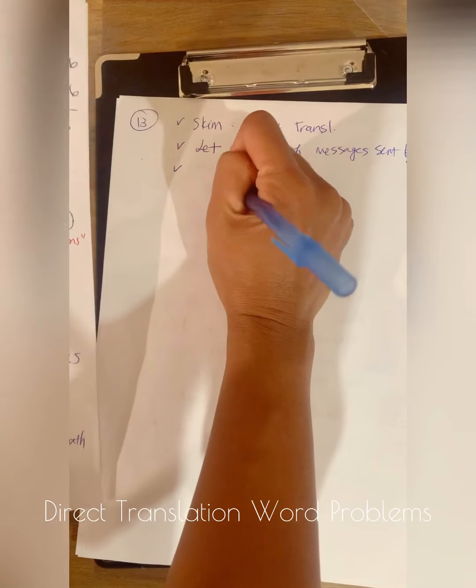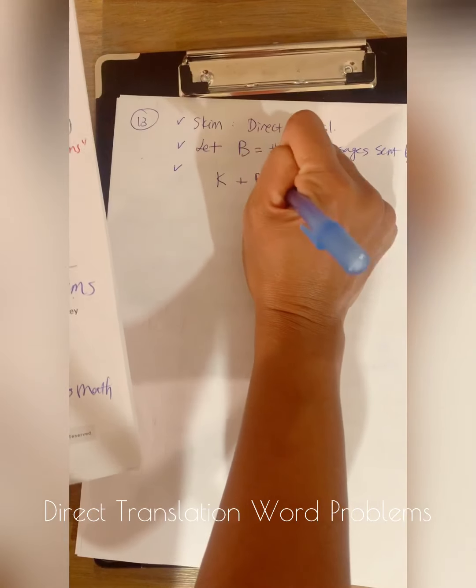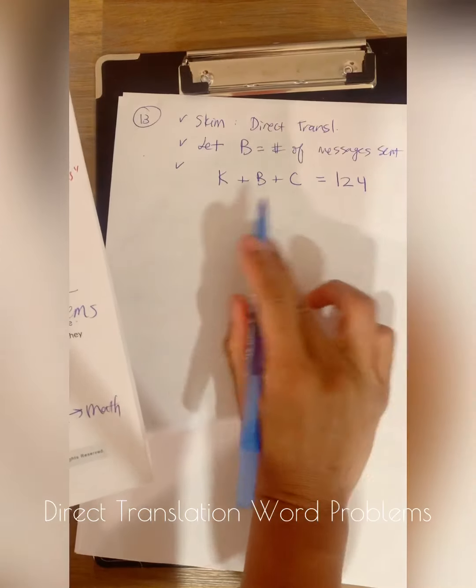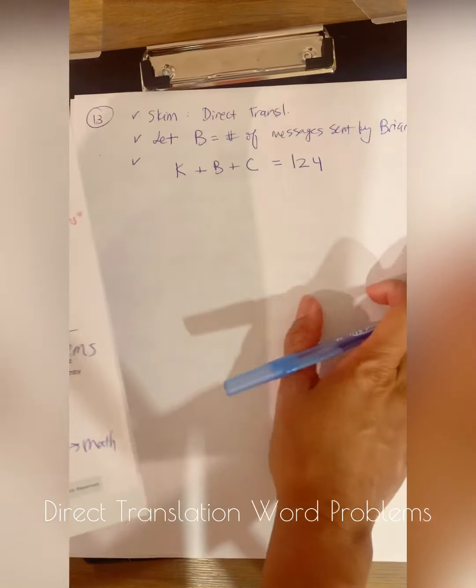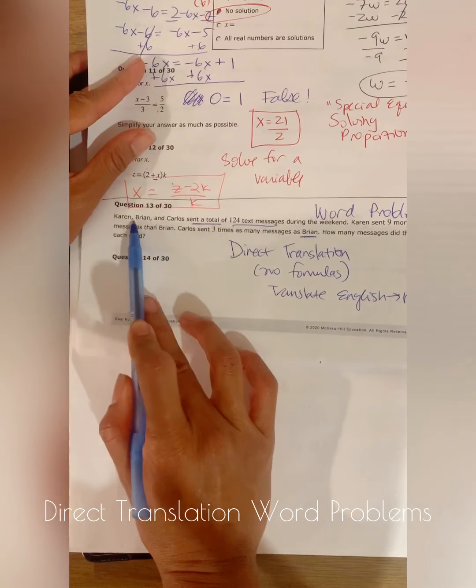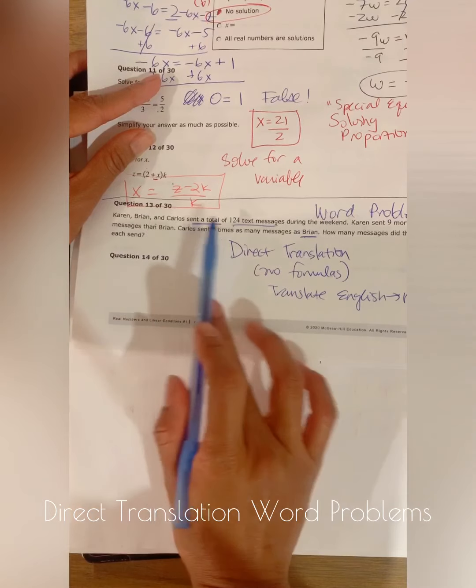So I'm going to write it in shorthand. I'm going to write Karen plus Brian plus Carlos is equal to 124. Notice that's an equation, right? Because that's what we want to create, an equation. And remember, a total means that you add everything up before it. So I just translated English to math.